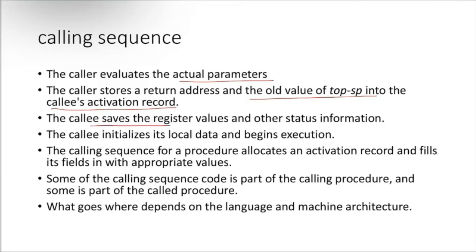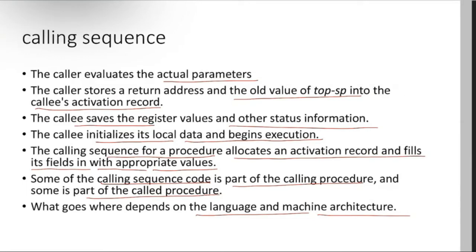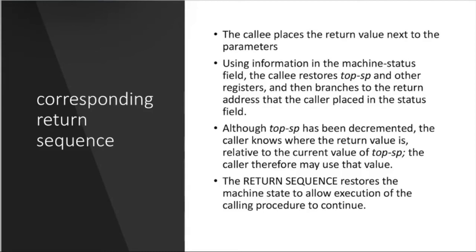In the calling sequence: the caller evaluates actual parameters; the caller stores a return address and the old top-of-stack value into the callee's activation record; the callee saves register values and other status information; the callee initializes its local data and begins execution. Some of the calling sequence code is part of the calling procedure and some is part of the called procedure — what goes where depends on language and machine architecture.